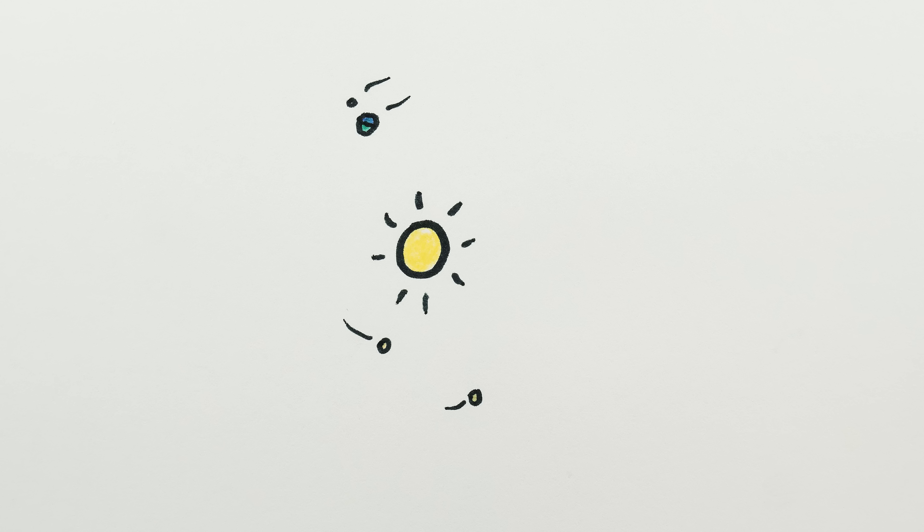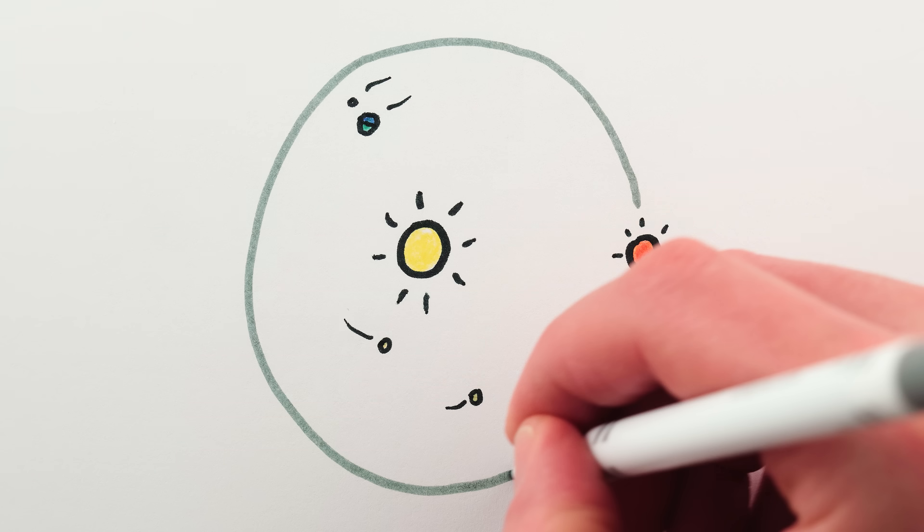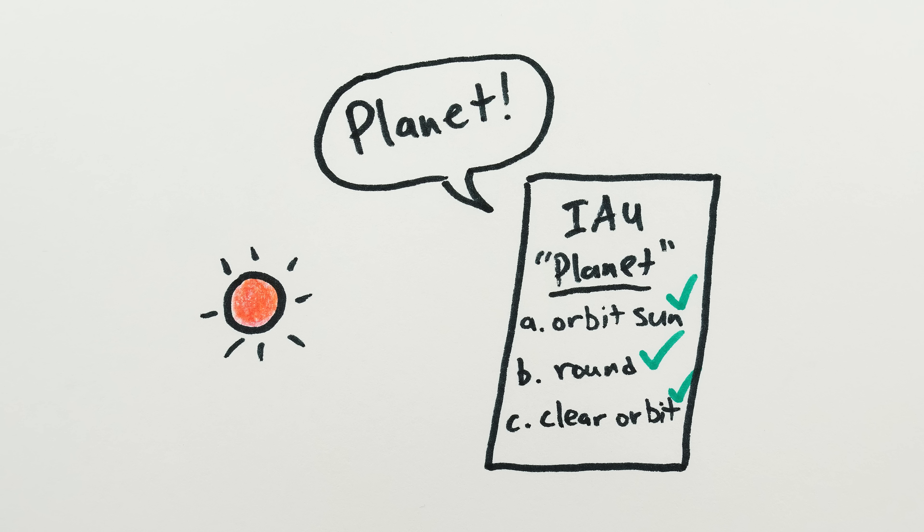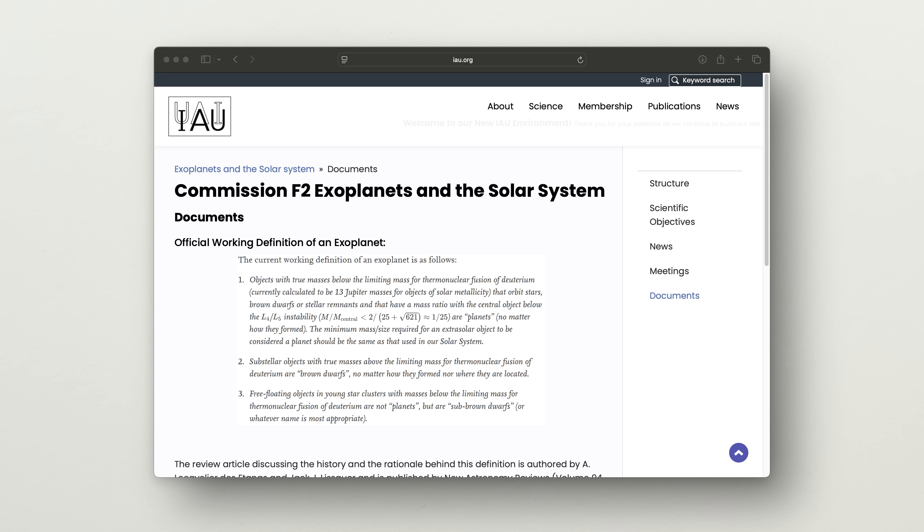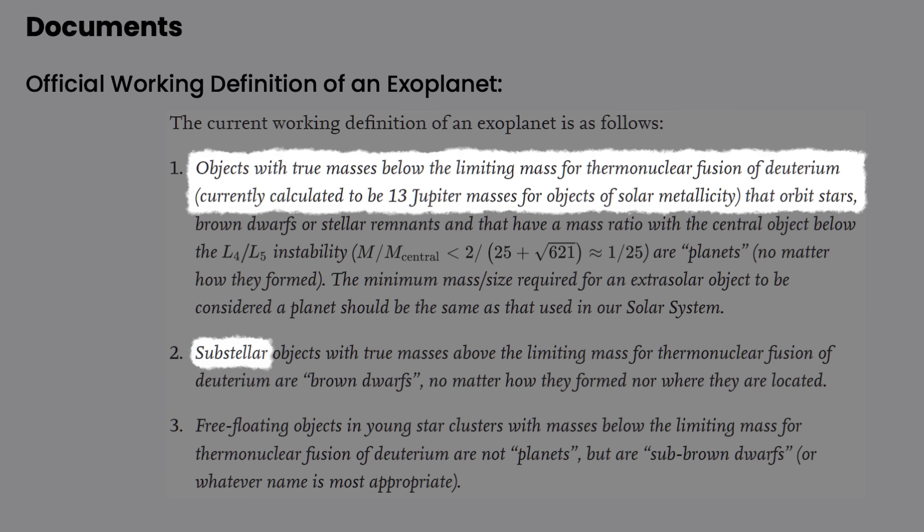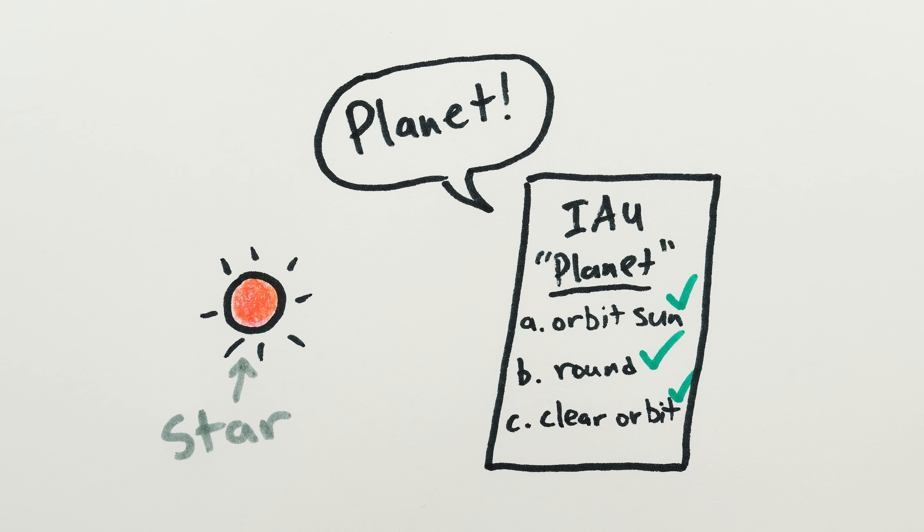Okay, so another problem with the IAU's definition for a planet is that if a small red dwarf star passed by the solar system and got captured and went into orbit around the sun, according to the IAU's definition, that star would also be a planet, even though it's a star. And people know this is a problem because definitions for exoplanets often say they have to be substellar or never underwent fusion or whatever. But the IAU did not put it into this definition.